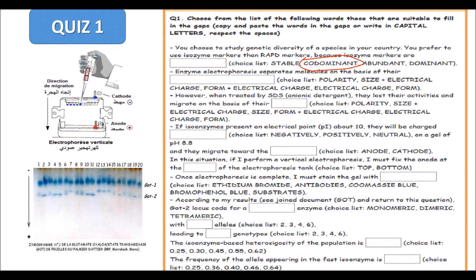Enzyme electrophoresis separates molecules on the basis of their polarity or size plus electrical charge, or form plus electrical charge, or electrical charge, or just form. Isozymes are separated regarding their size plus electrical charge, which can be written in the gap. However, when treated with SDS and anionic detergents, they lose their activities, these isozymes, these enzymes, and migrate on the basis of their size only, because they will all be charged negatively and only the size separates between the molecules.